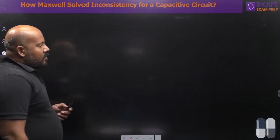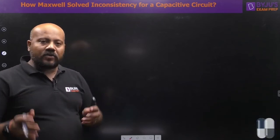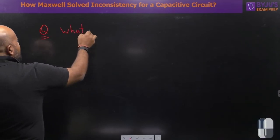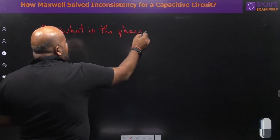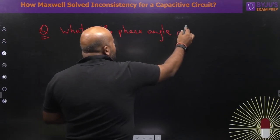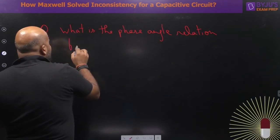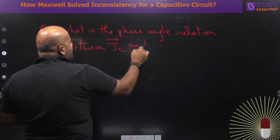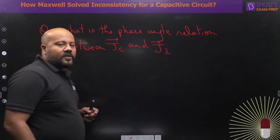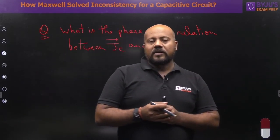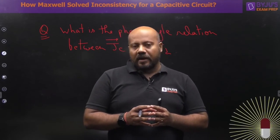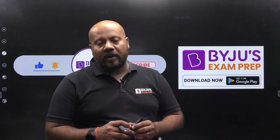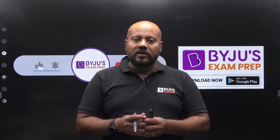I hope you understood the concept. But before we proceed to the conclusion, let me ask you a basic question: what is the phase angle relation between the conduction current density Jc and the displacement current density Jd? I will be waiting for your response in the comment section. Do not forget to give your comment — I will tell you the correct answer. Thank you so much for joining us live in the concept capsule. Do not forget to subscribe to Byju's Exam Prep for more such informative sessions. Thank you, take care.